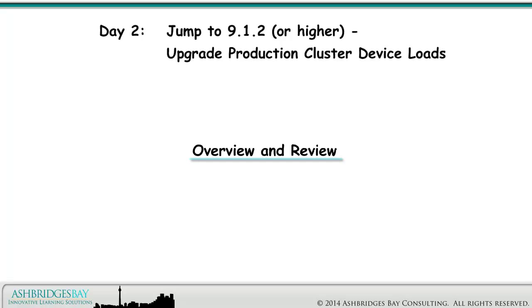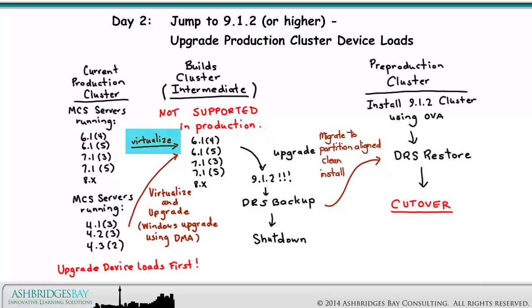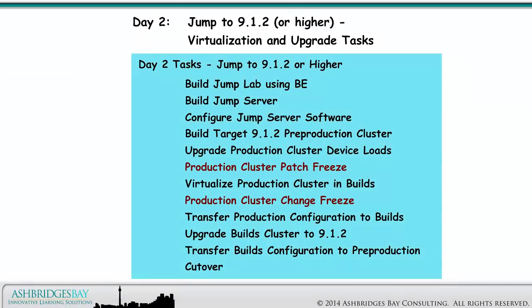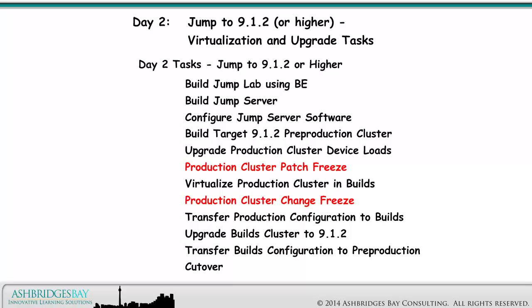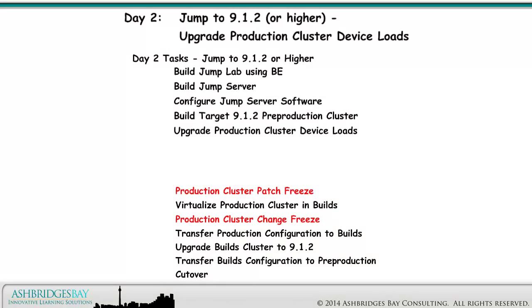Let's start with a quick overview and review. This is an overview of the Jump upgrade in Virtualization. This drawing looks at upgrading the device loads in the production cluster — Enterprise 20 does this before virtualizing the production cluster in builds. Here are the tasks for a Jump to 9.1.2 virtualization and upgrade. On Day 2 — a figurative day — we virtualize and upgrade our CUCM cluster. Here are the individual tasks for upgrading the production cluster device loads.